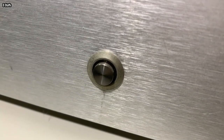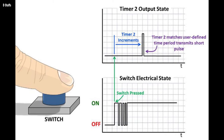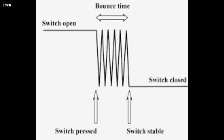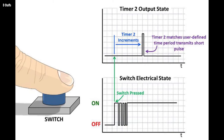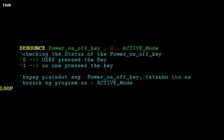Kung pindutin natin ang NO switch, magkokonek iyon. Mayroon tayong dapat malaman sa switch: sa larangan ng milliseconds, kung pindutin natin ay magkakaroon ng napakabilis na connection at disconnection na paulit-ulit — parang bula na tumatalbog. Hindi natin nakikita iyon pero nangyayari iyon sa mundo ng milliseconds. Ang phenomenon na iyan ay tinatawag na switch bounce. Tandaan lang natin iyan dahil napakahalaga iyan sa push button detection ng microcontroller.